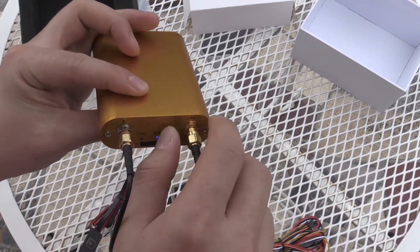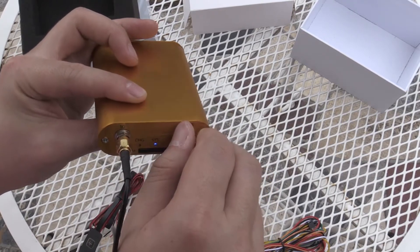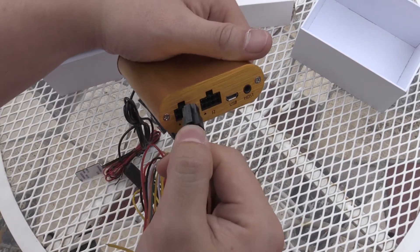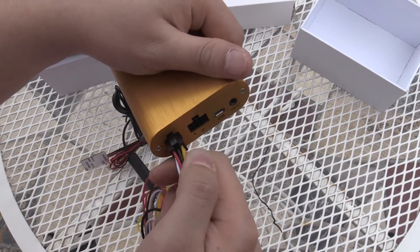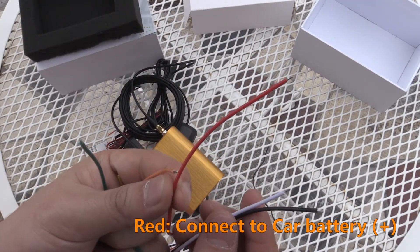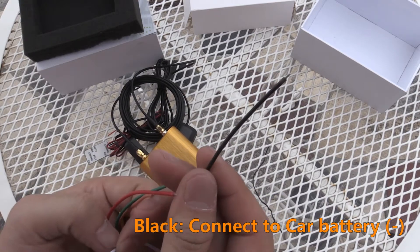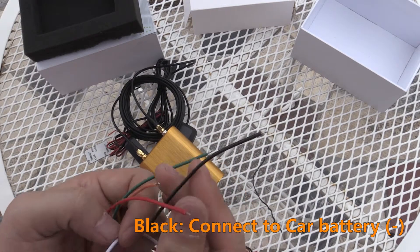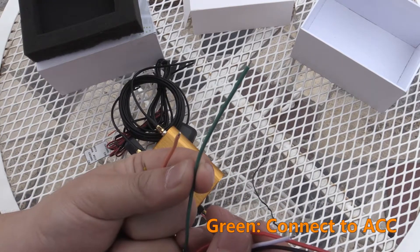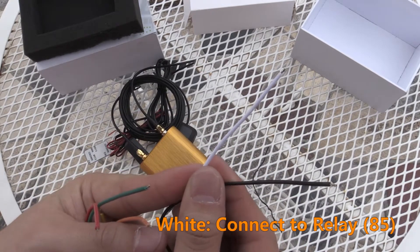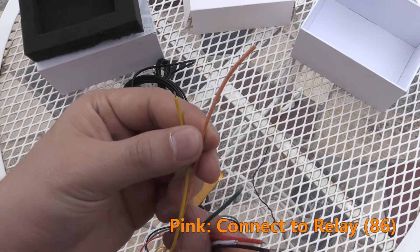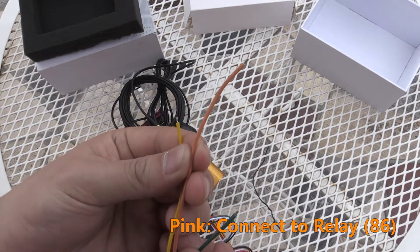Three, install the power wire. Red connect to car battery plus. Black connect to car battery minus. Green connect to ACC. Yellow connect to SOS. White connect to relay 85. Pink connect to relay 86. Note, relay is optional.